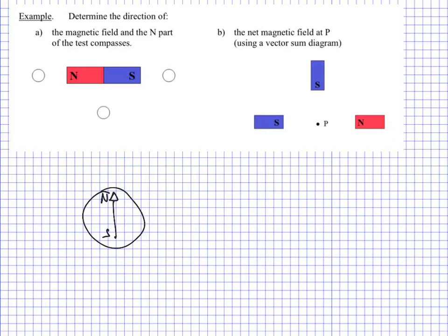So if I was to draw the direction of the magnetic field on my bar magnet, I'm going to draw that with blue dotted lines. We know that blue dotted lines represent the fields, and they're going to go away from the north. So these blue field lines are going to head away from the north and towards the south. So they're going to curl around here, going away from the north on both sides.